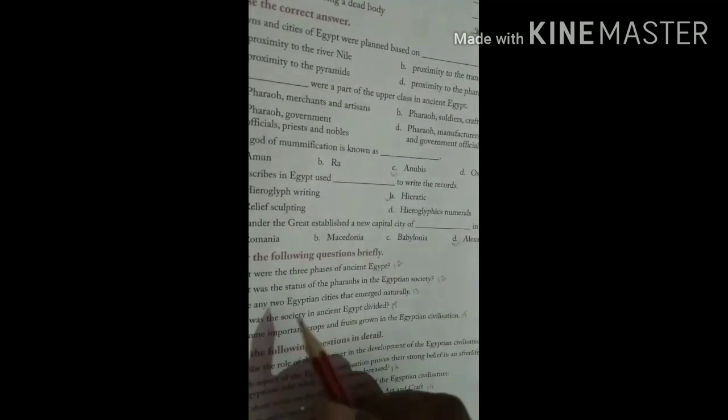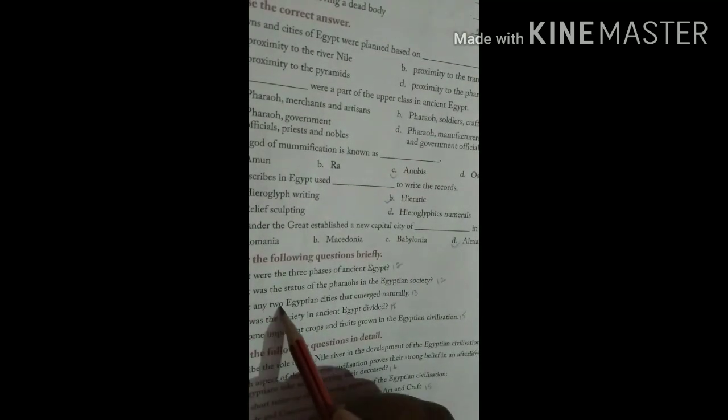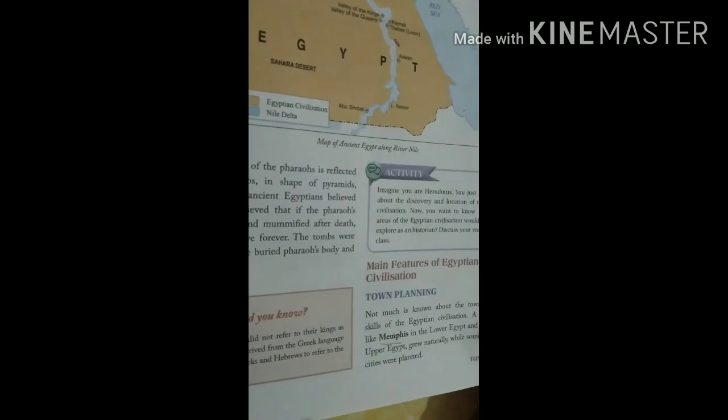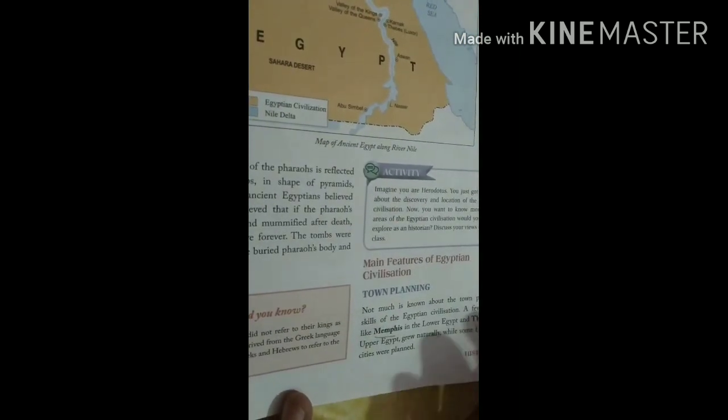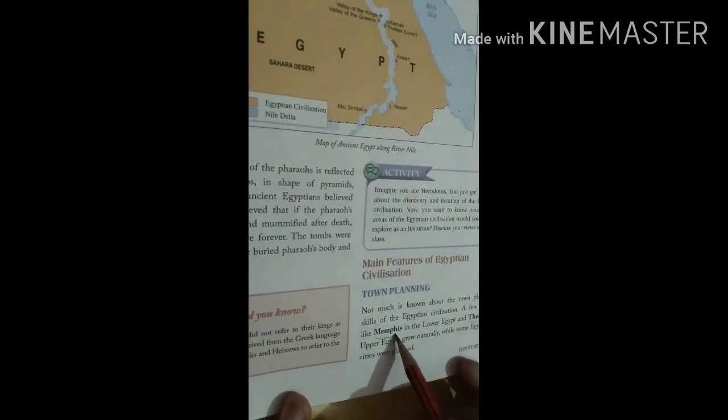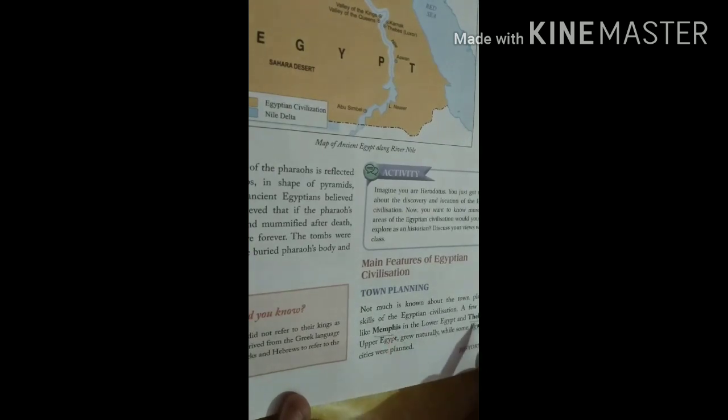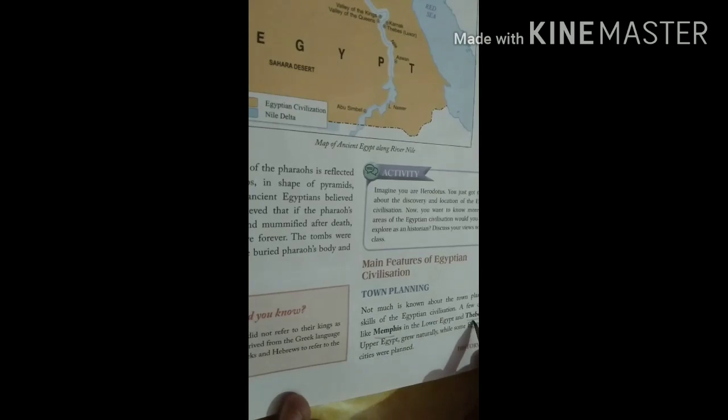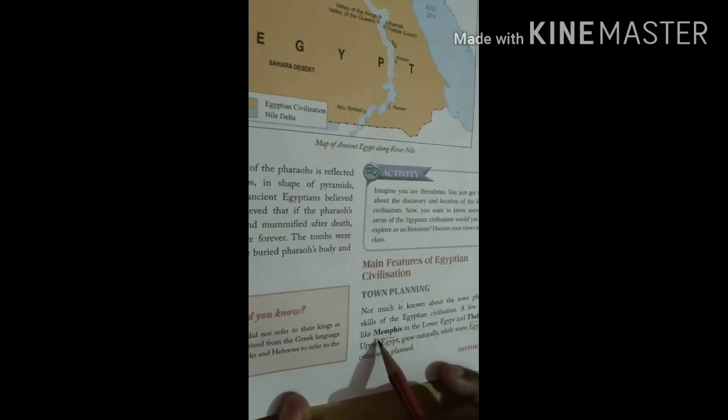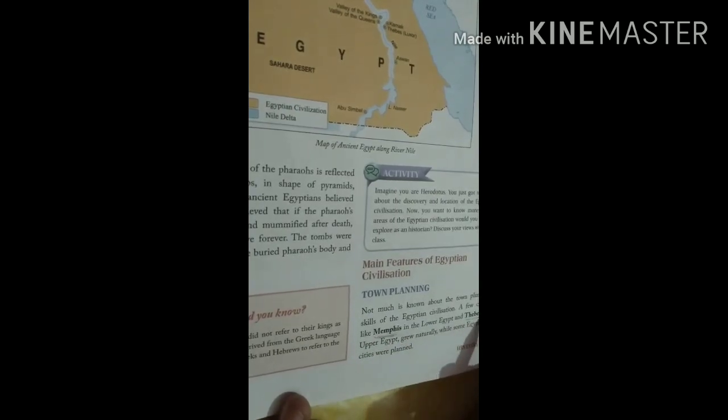Now third, name any two Egyptian cities that emerged naturally. This is on page number thirteen. Two cities: Memphis and Thebes. You have to write it in full sentence.